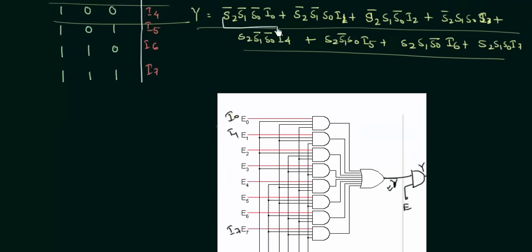All these minterms, this one, this one, we are having total 8 minterms. And all these minterms are implemented by using these different AND gates, 8 AND gates here.